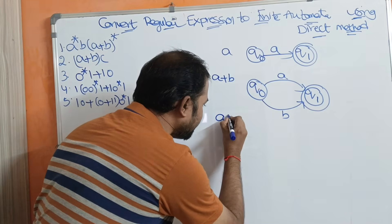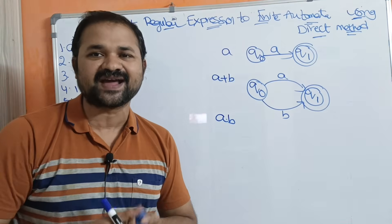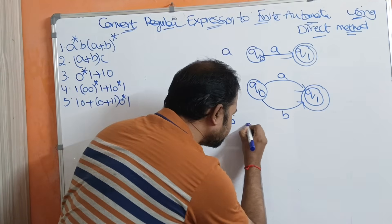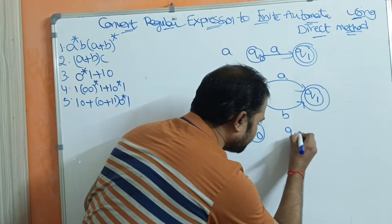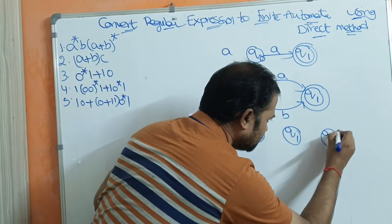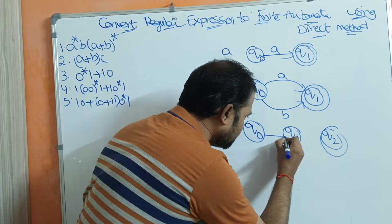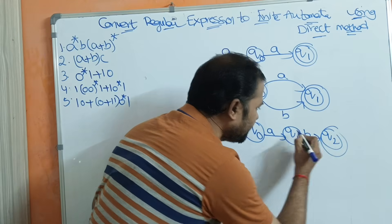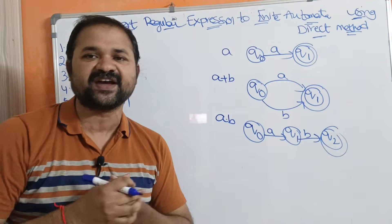Let the regular expression be A dot B. Dot stands for concatenation. Here we require three states. Let the initial state be Q0, the next state Q1, and the final state Q2. The input symbols are A and B. For concatenation: Q0 on A goes to Q1, and Q1 on B goes to Q2, which is the final state.